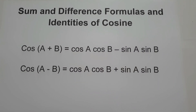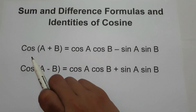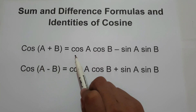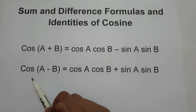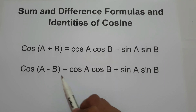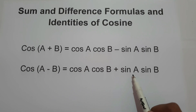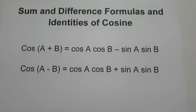In this video, we are going to explain how to find the exact value of a trigonometric expression with angles in radians and degrees using the sum and difference formulas and identities of cosine. There are two formulas to remember. The first is cosine(A+B) = cosine A times cosine B minus sine A times sine B. The second is cosine(A-B) = cosine A times cosine B plus sine A times sine B.